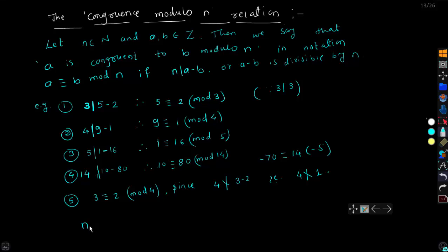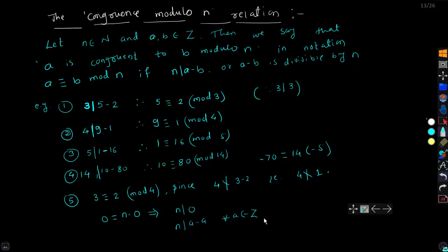Note that 0 can be written as n times 0, which implies that n divides 0. Therefore n divides a minus a for all a belonging to Z. In this way we have defined congruence modulo n, which has many applications in number theory.